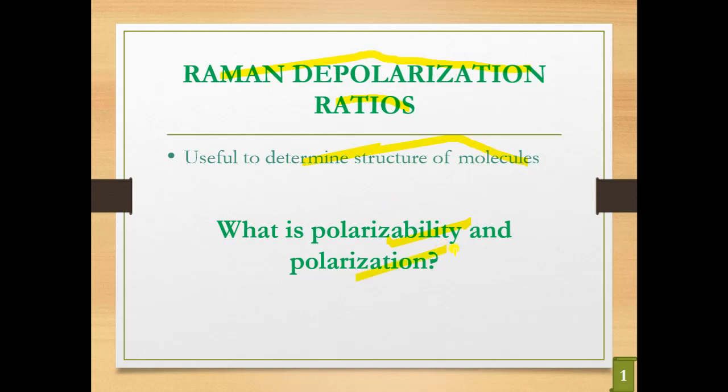Polarizability describes a molecular property having to do with the deformability of a bond. In contrast, polarization is a property of a beam of radiation and it describes the plane in which the radiation vibrates. This is the difference between polarizability and polarization.